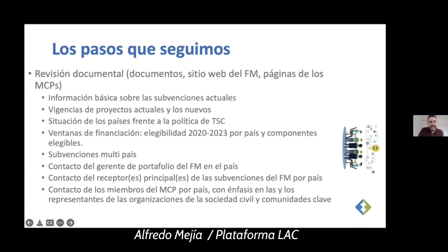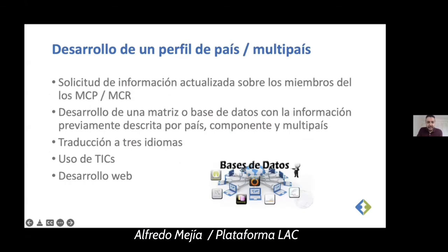We also included the multi-country grants, contacts of Global Fund managers in every country — because that information was often very far from civil society organizations — as well as contacts with the main grant recipients and members of CCMs per country, based on who is represented in these decision-making processes. After that, we developed a profile per country and a profile of the multi-country grants, requesting updated information from members of the RCMs and MCRs, and developed a matrix or database with information described by country, component, and multi-country processes.